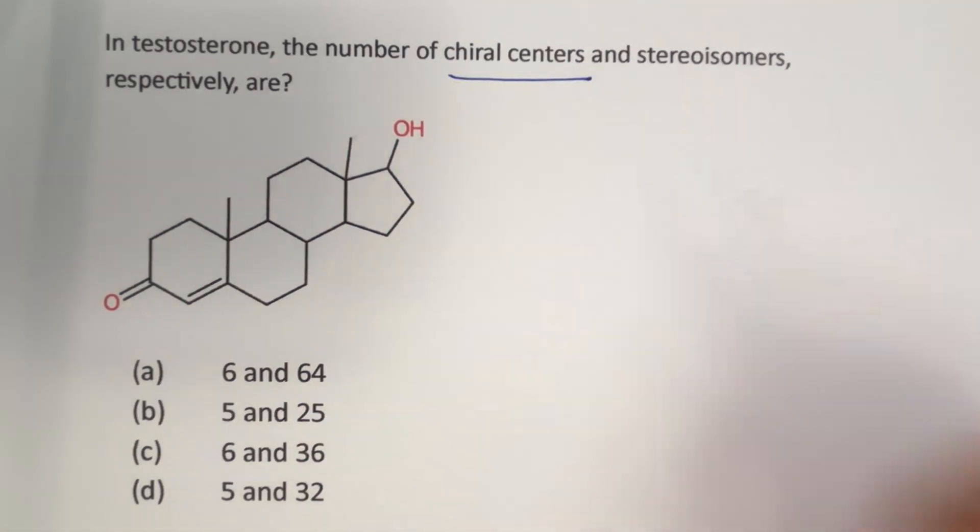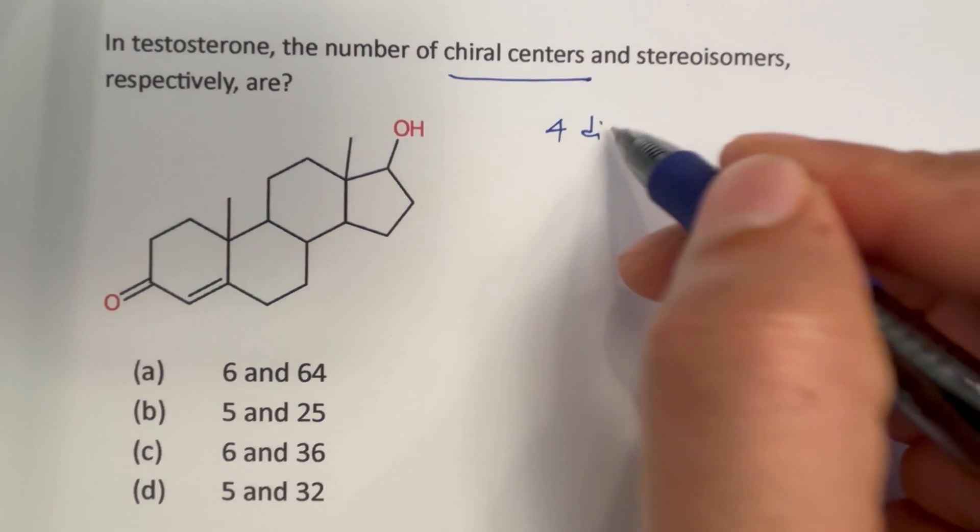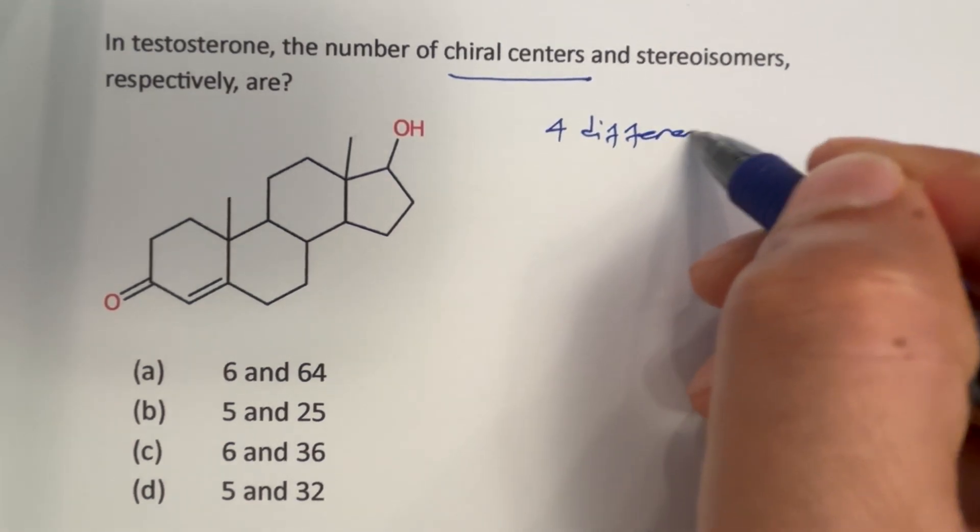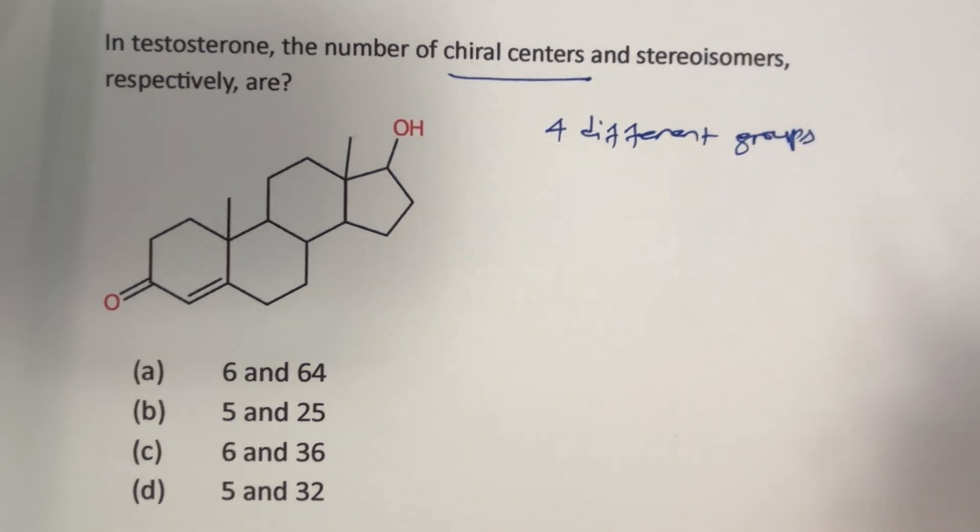So if a carbon atom has to be chiral, then it needs to have four different groups, isn't it? It should have four different groups attached to it.